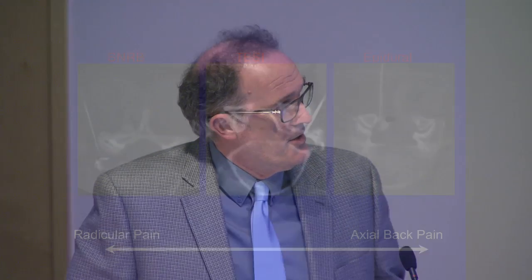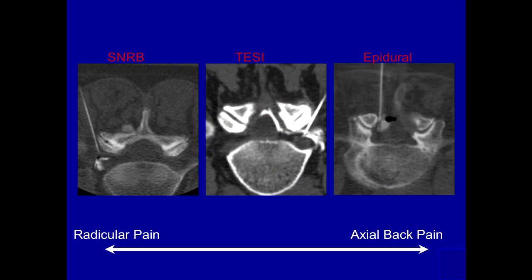We can do these nerve root blocks — we can do an injection and get a transforaminal epidural, or we can go through the lamina itself through the ligamentum flavum and position our mixture in the intralaminar epidural space.